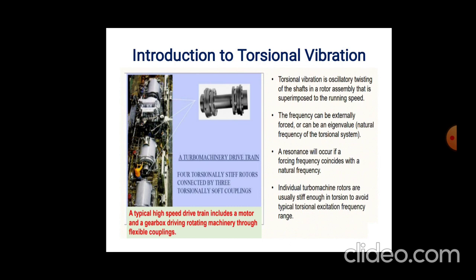Introduction to torsional vibration: it is oscillatory twisting of the shaft in the rotor assembly that is superimposed on the running speed. The frequency can be externally forced or can be eigenvalues. Resonance will occur if a forcing frequency coincides with the natural frequency. Individual thermomachines' rotors are visually stiff enough in torsion to avoid the typical torsional excitation frequency range.